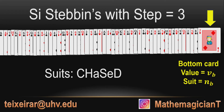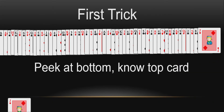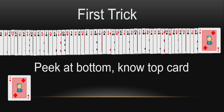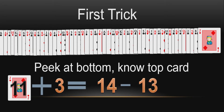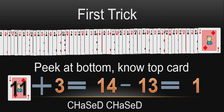There are a lot of tricks. Once you organize your deck with this sequence: take a look at the bottom card, then you know the top card. For example, if the bottom card is the jack of diamonds, what's going to be the top card? You just add three. Jack is 11, plus 3 is 14. Modulus 13, remove 13, and you get 1. Since it's diamonds and after diamonds come clubs, the top card is the ace of clubs. So that's the first trick.